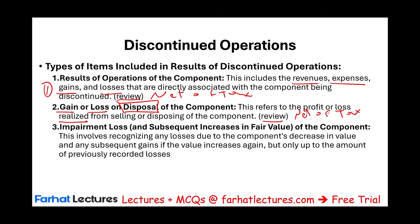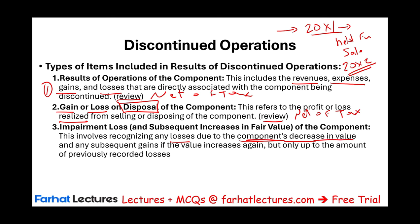Think about it: we decided to sell an asset in year X1, so this asset becomes held for sale. When it's being held for sale, we may not sell it until 20X2 or even 20X3. When 20X2 ends, we have to determine if we can recover the book value of this division. If not, we have an impairment loss. This involves recognizing only losses due to the component's decrease in value. If its recoverable value is less than its book value, we recognize an impairment loss. Any subsequent gain if the value increases again is recognized only up to the amount of previously recorded losses.